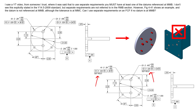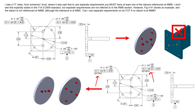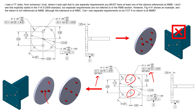Separate requirements breaks the rule of simultaneous requirements. We've separated the checking of these two patterns so they are no longer clocked together — that requires two separate gauges. We can check the orientation and location of these four holes with respect to datum simulators A and B separately from the two holes. A part that has these patterns rotated relative to each other could pass, because we check them separately. That is the whole reason we apply separate requirements — to loosen rotational constraint for manufacturing.